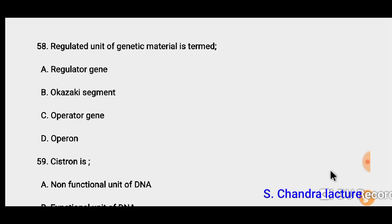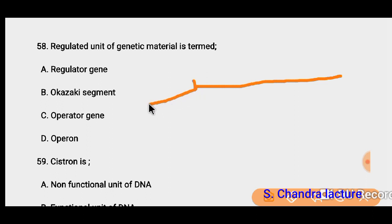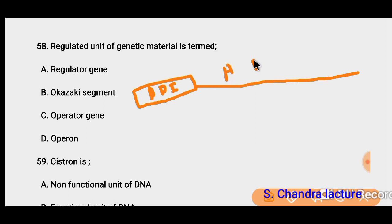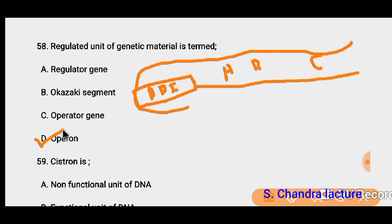Question 58: The regulated unit of genetic material is called an operon. Suppose we have gene A with an operator, a promoter, and an inhibitory gene attached to regulate it. If there are three genes — A, B, C — all regulated by an operator and promoter, then the entire regulated unit is called an operon.